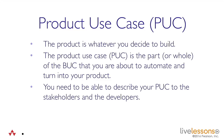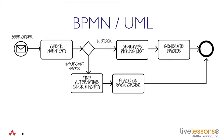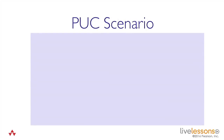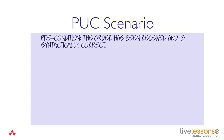You need to be able to describe your puck to the stakeholders and developers, because that's what you're about to spend money on by building the automated product. We have a number of ways of doing that. We can use BPMN or a UML activity diagram — these are popular with the more technically oriented people, though some business people find them a little hard to use. Or I can use a puck scenario, which I think is a much more business-friendly approach.